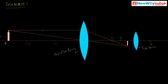The object is AB, and the image formed is B-dash A-dash — it is inverted. This real image now becomes the object for the eye lens. If you adjust the eye lens, the image is placed between the principal focus of the eye lens and the optical center of the eye lens.